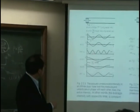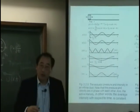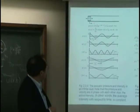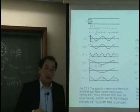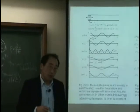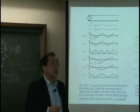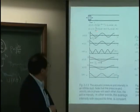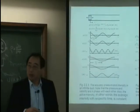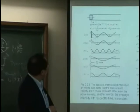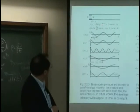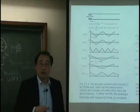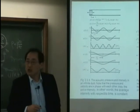For example, what you can normally have a mistake is, you express pressure in complex notation P0 exponential J omega T minus KX. And you express velocity as the complex notation. And you just put these two complex notations to intensity P multiplied velocity. That is wrong.